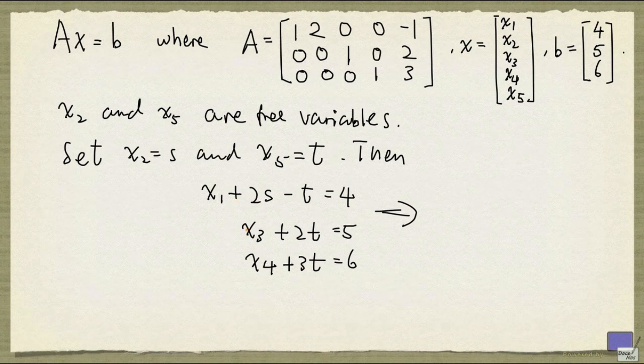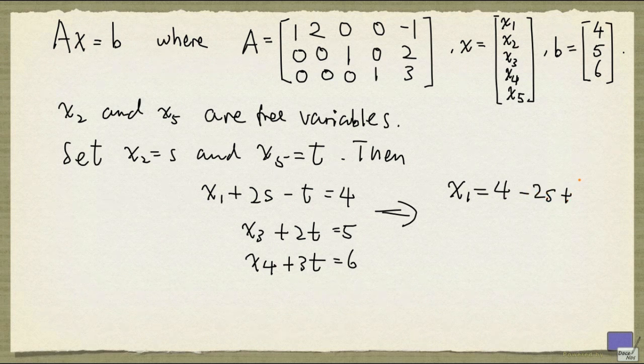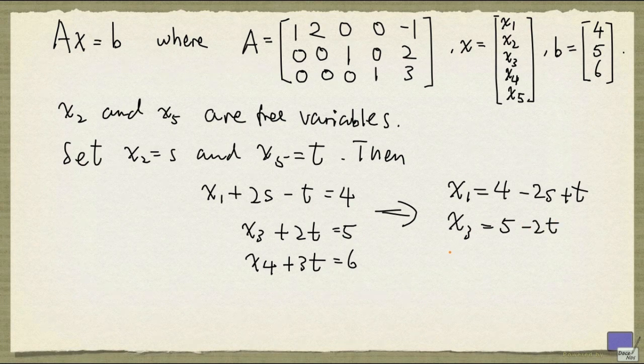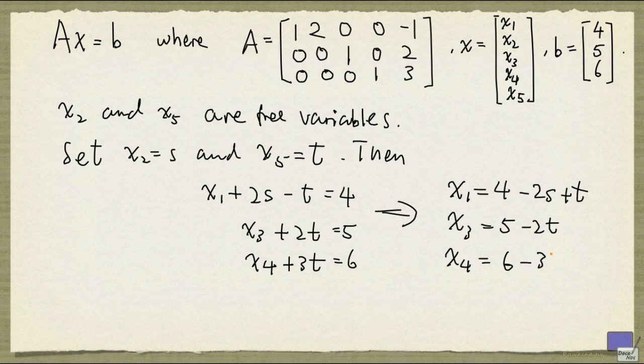So if you solve for x1, x3, and x4 in terms of s and t, what you get is x1 equal to 4 minus 2s plus t, x3 equals 5 minus 2t, and x4 equals 6 minus 3t.